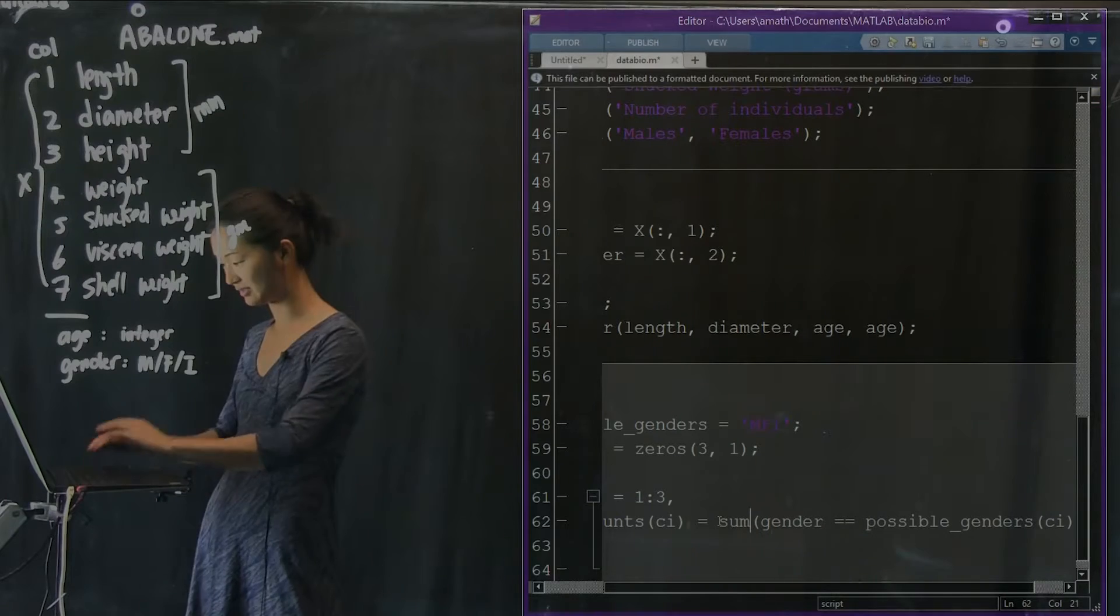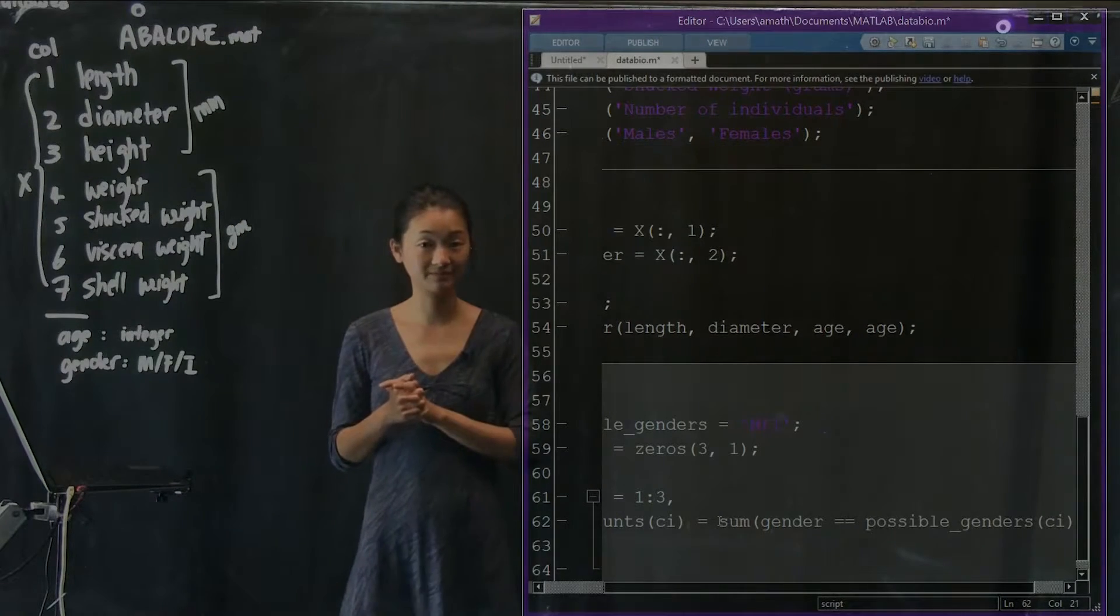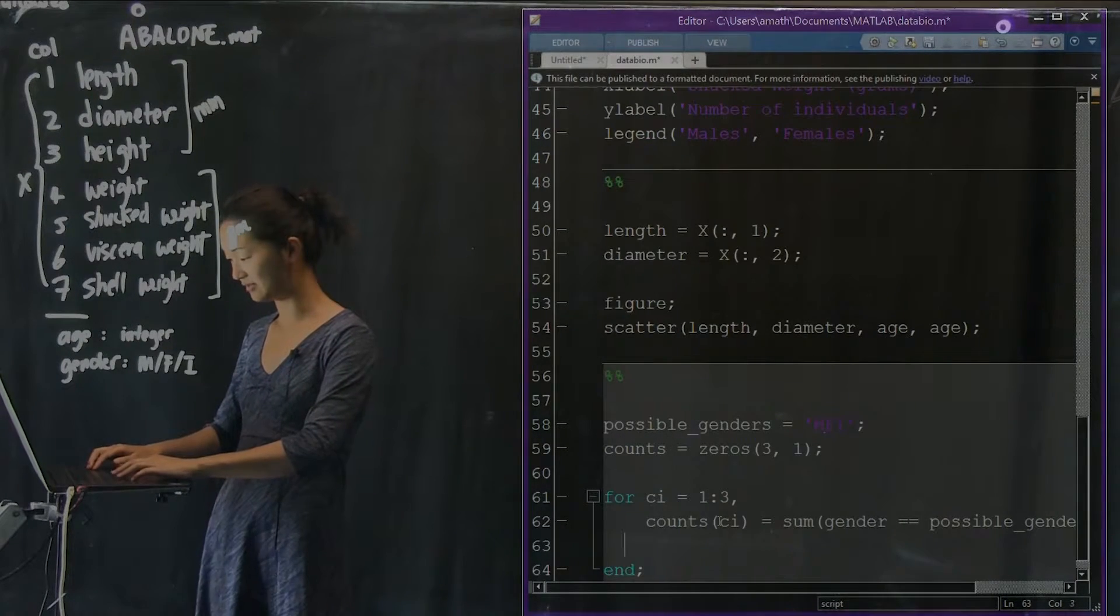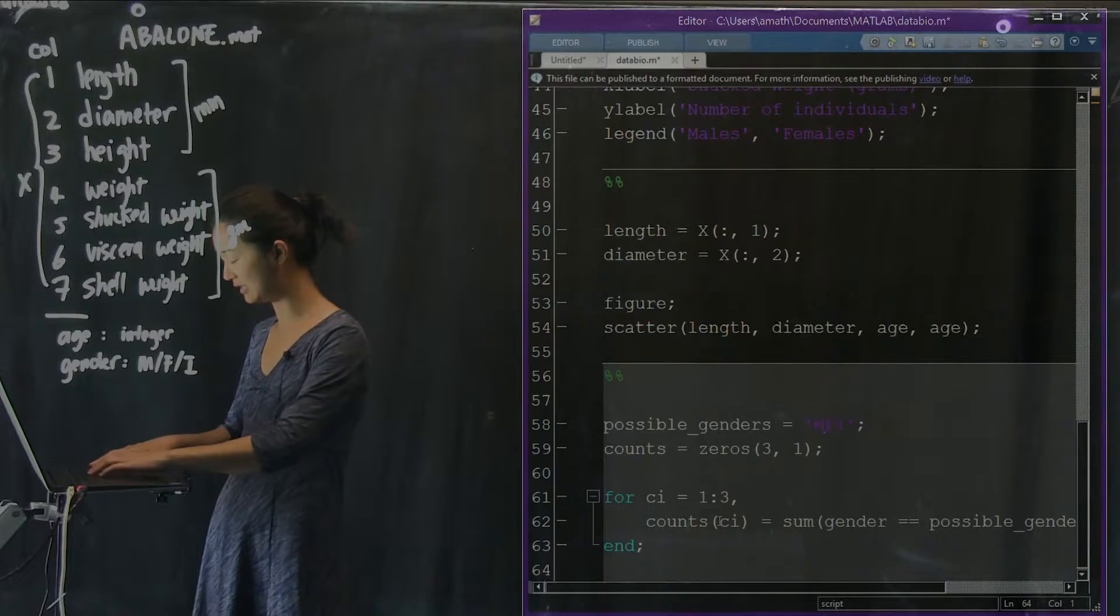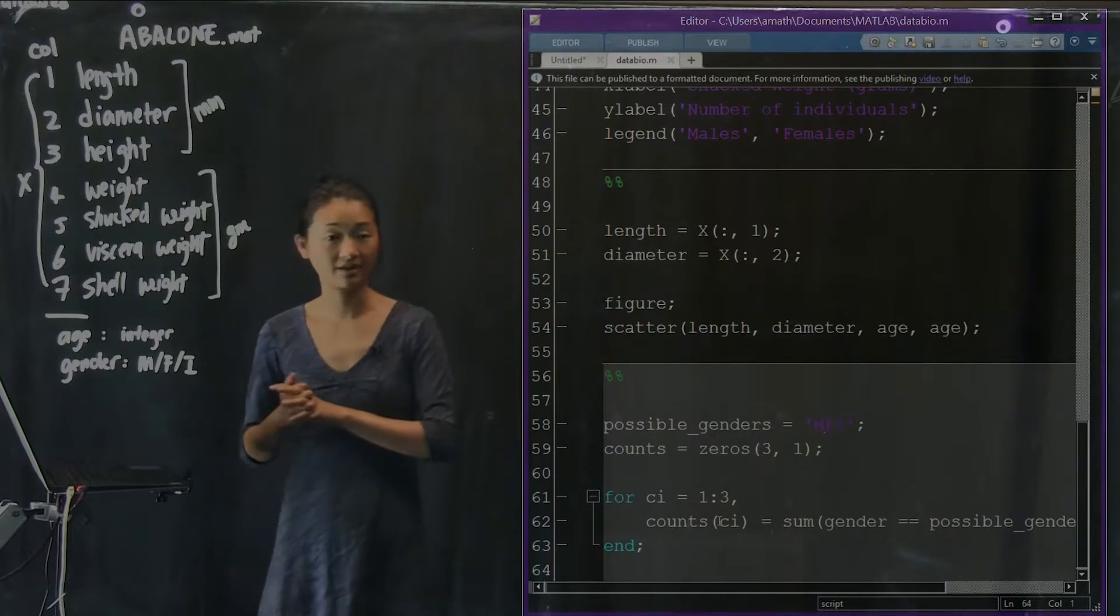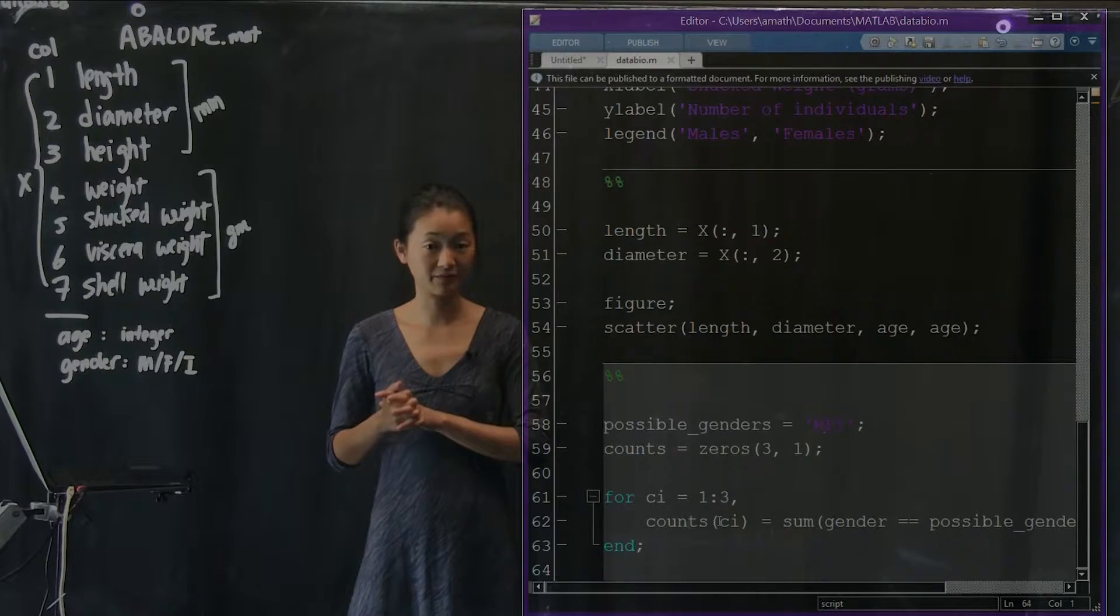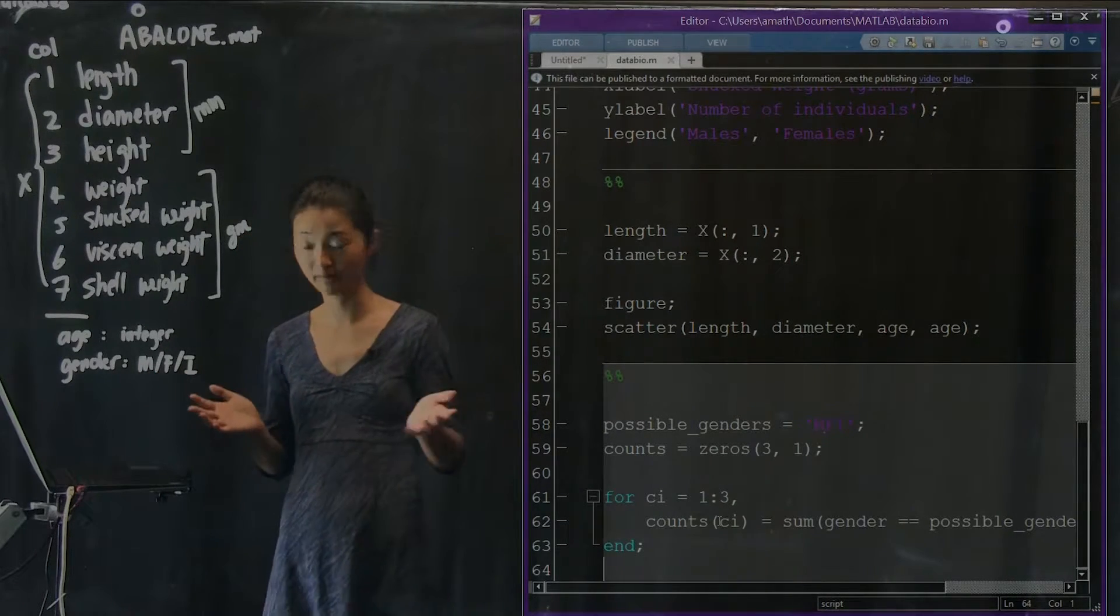All we have to do is take the sum of that vector. And if we do this, then we will end up with a vector of three numbers called counts that contains this information.